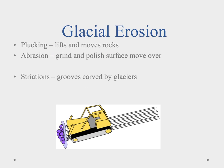Glaciers are nature's bulldozer and you can kind of see that illustrated here in our picture. Glacial erosion is caused by two different ways. We can have plucking, which is the lifting and moving of rocks, and then we can have abrasion, which is using things trapped under the ice to grind and polish the surface. So we can move stuff away, take stuff, but we can also grind stuff down and polish it through abrasion.